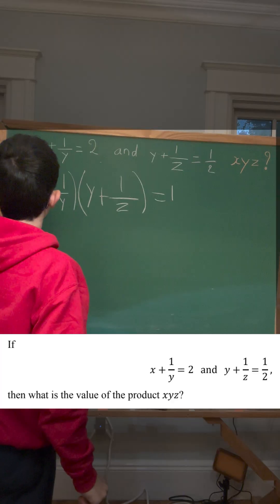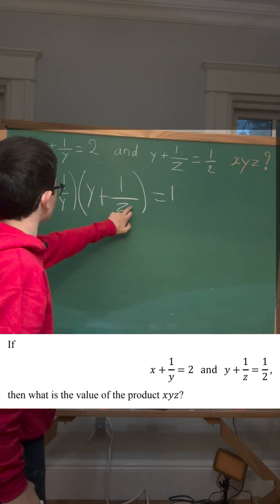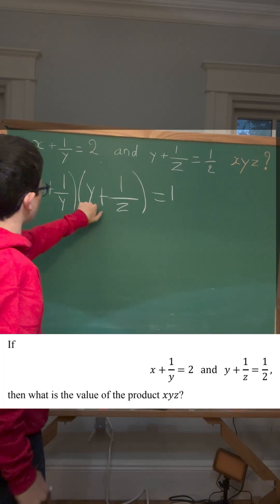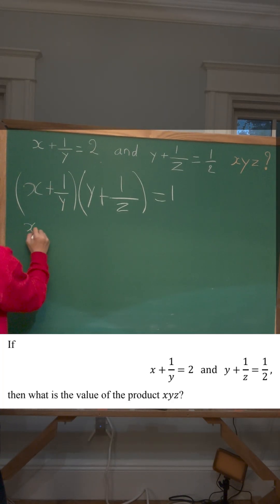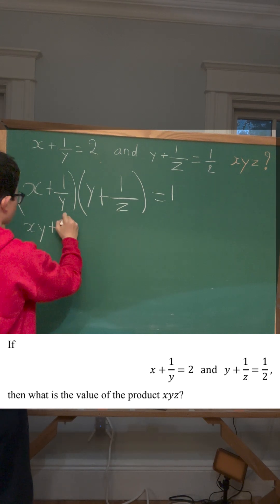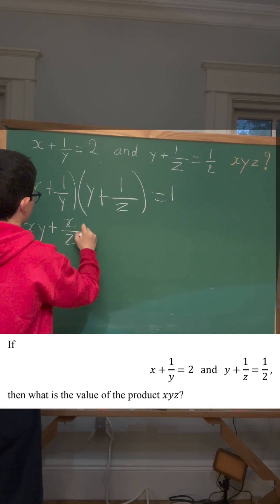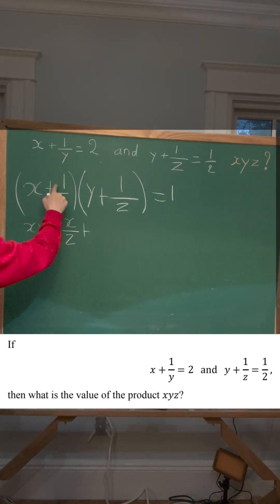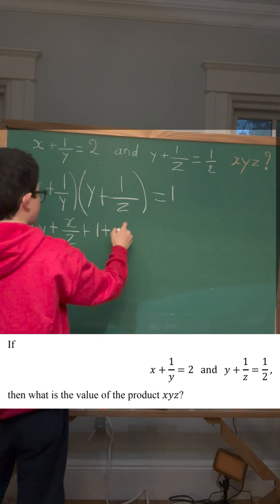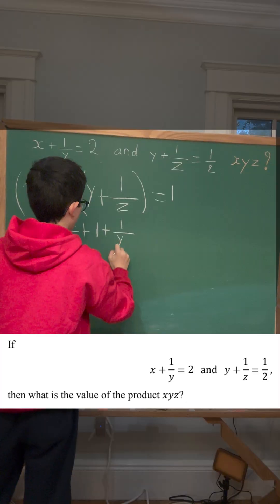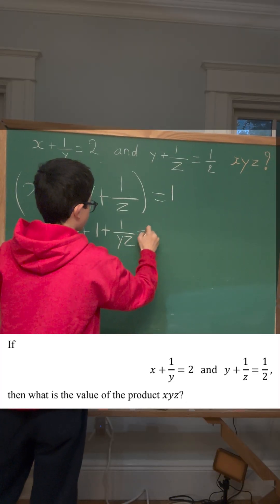We're going to distribute the x to the y and the 1 over z, and the 1 over y to the y and to the 1 over z. x times y is xy plus x times 1 over z is x over z plus, 1 over y times y is y over y, which is 1 plus 1 over y times 1 over z is 1 over yz, and this equals 1.